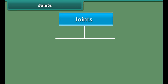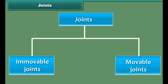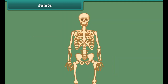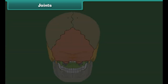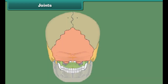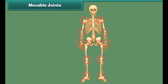The bones are fitted together by means of certain structures. These structures are called joints. Joints facilitate body movements. There are two main types of joints: immovable joints and moveable joints.